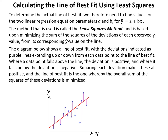To determine the actual line of best fit we need to find values for the parameters a and b. The method used is called the least squares method, based upon minimizing the sum of the squares of the deviations of each observed y value from its corresponding y-hat value on the line. The diagram shows a line of best fit with deviations indicated as lines extending up or down from each data point to the line.